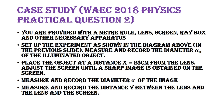They say: place the object at distance X = 25 cm — so U = 25 cm. Adjust the screen until a sharp image is obtained. When the screen is at the exact point where the image forms, that is where the image is sharpest. That point's distance from the lens is V, the image distance.